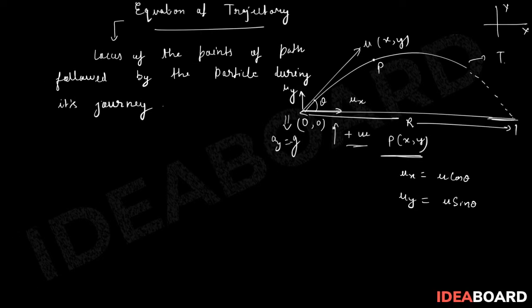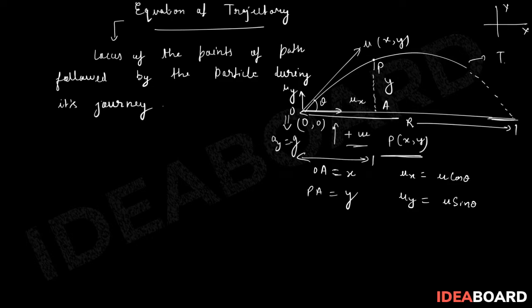Now, for a point P with coordinates (x, y), the horizontal displacement OA equals x, and the vertical displacement PA equals y.